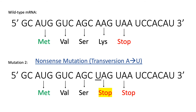He determines the second mutation to be a nonsense mutation, since it encodes a stop codon instead of an amino acid. This too is classified as a transversion, since it goes from a purine to a pyrimidine — adenine to uracil.